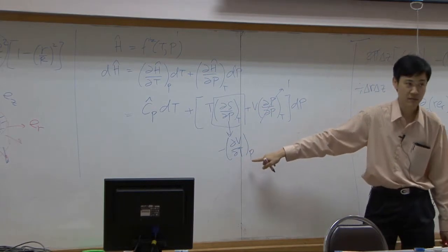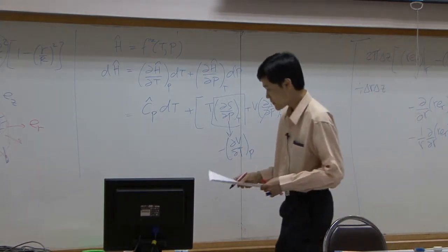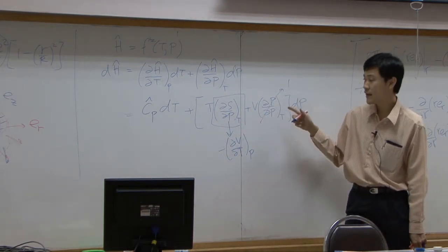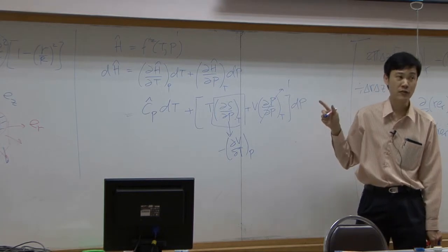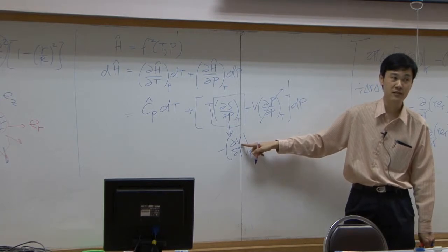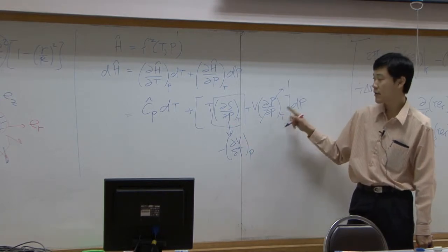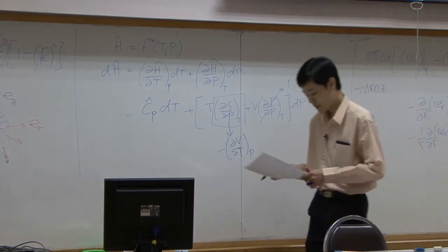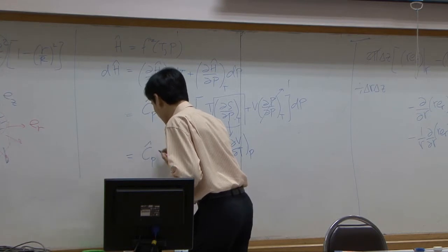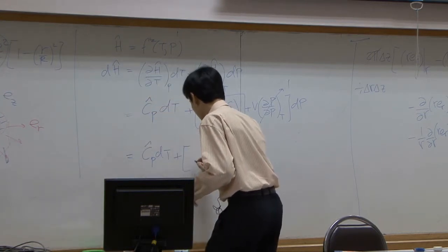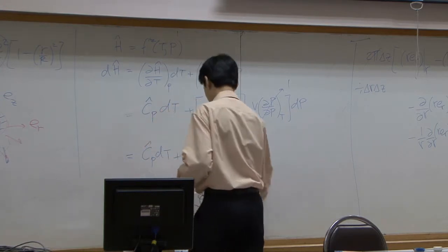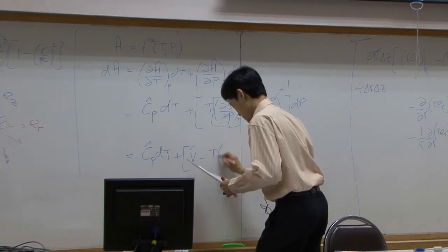Now everything in this parenthesis or this bracket would be a variable that you can measure: temperature, specific volume which is inverse of density, and pressure. So at the end you have CP dT plus V.